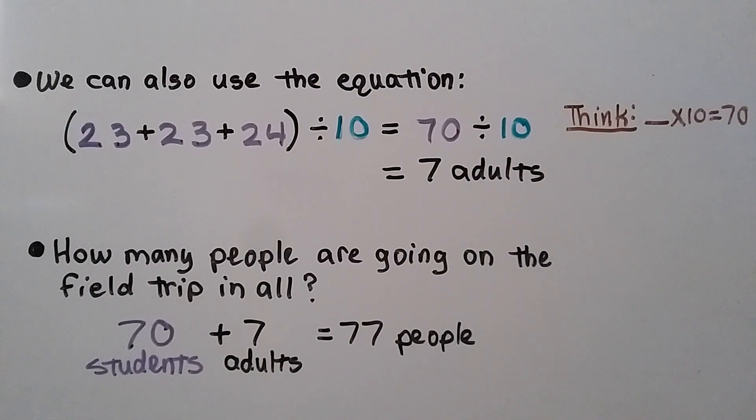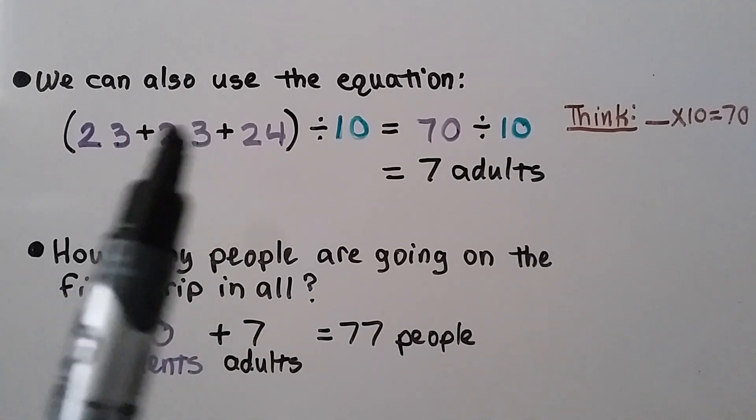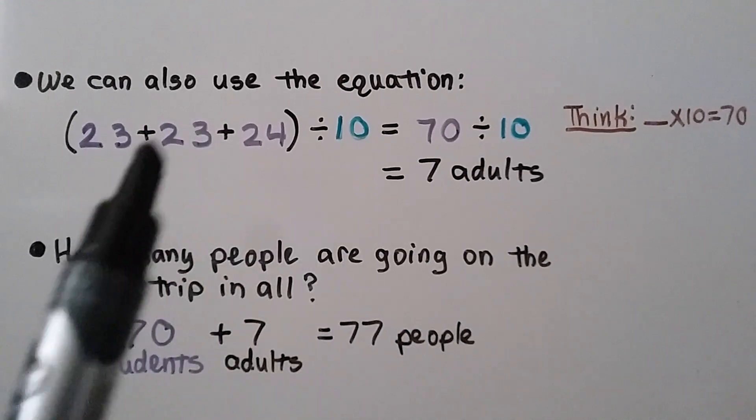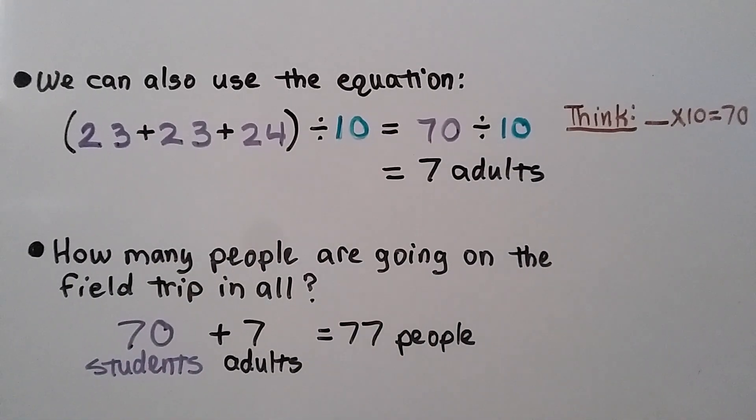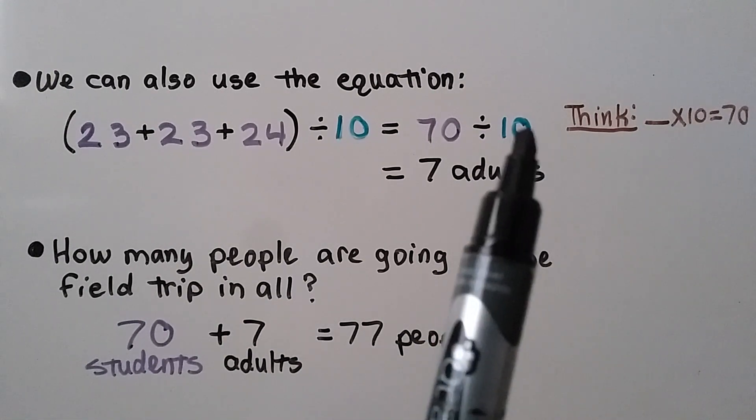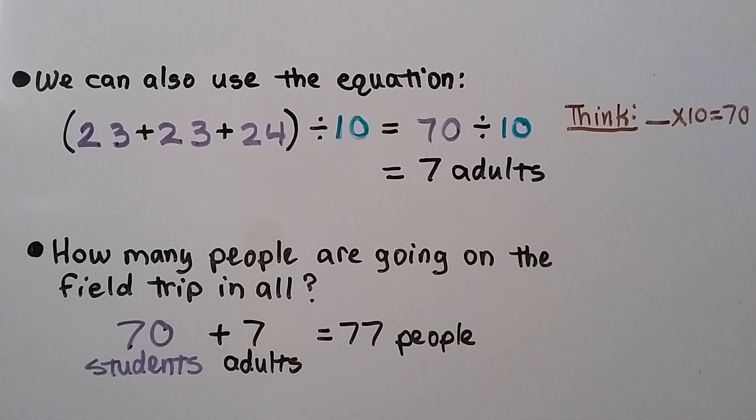We can also use the equation 23 plus 23 plus 24 in parentheses, so we add them first, divided by 10. We add these. We get 70. We do 70 divided by 10. That's 7 adults. And we can think some number times 10 is equal to 70 to help us solve it. And how many people are going on the field trip in all? There's 70 students. There's 7 adults. That's 77 people.